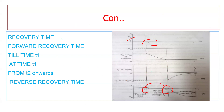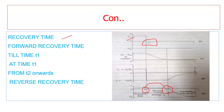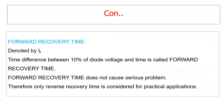The recovery time is the duration after which the diode returns to steady state when switching from ON to OFF, because the minority charge carriers in the P and N sides of the diode are not instantly removed. Next is the forward recovery time, denoted as tf. This tf represents the time difference related to the diode voltage, and is called the forward recovery time. The forward recovery time does not cause a serious problem, and therefore only the reverse recovery time is considered for practical applications.